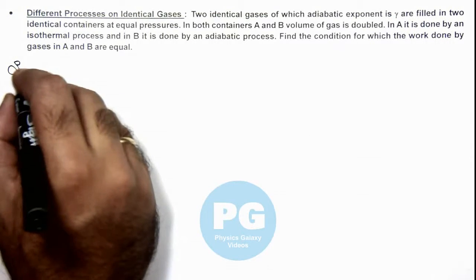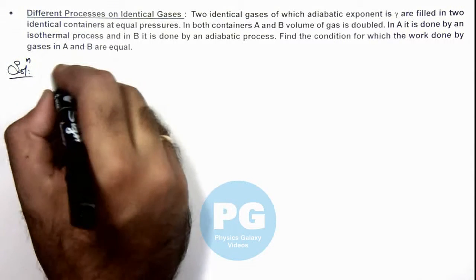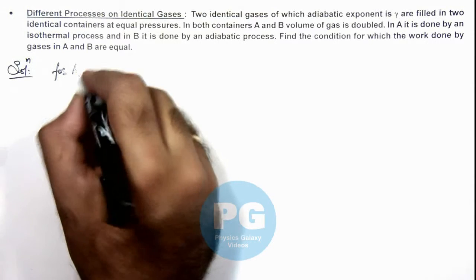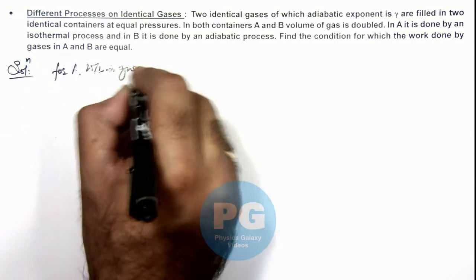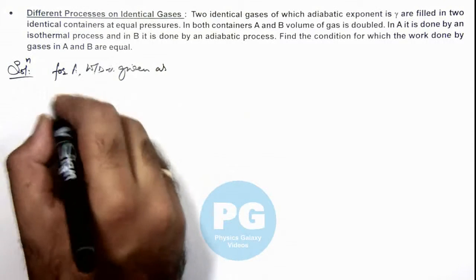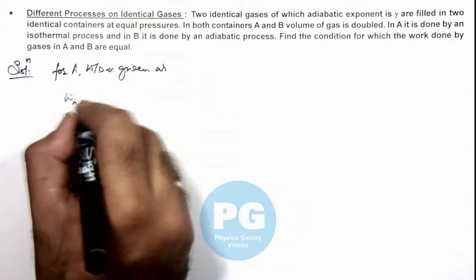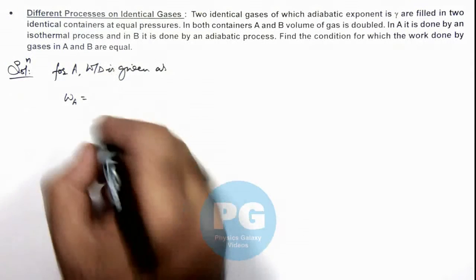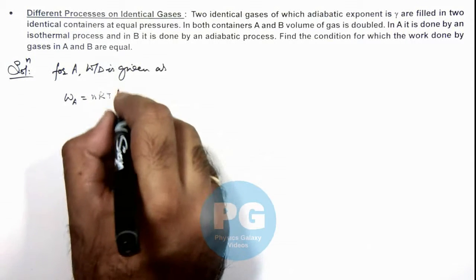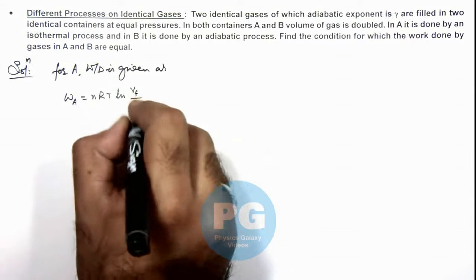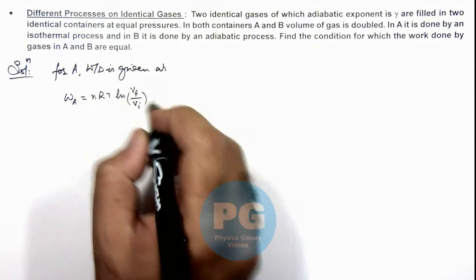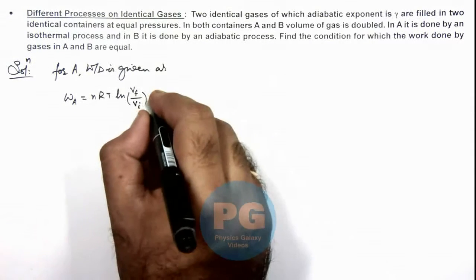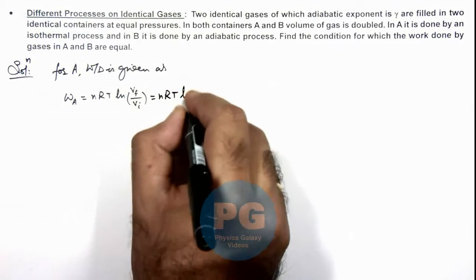So in solution we can write for container A, work done is given as W_A. For isothermal process this can be written as nRT ln(V_final / V_initial). And as we are given that the volume is doubled, the work done we are getting is nRT ln(2).